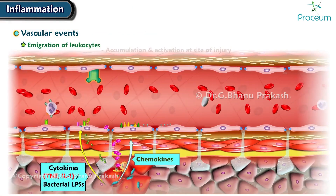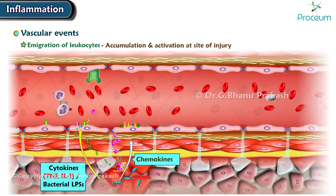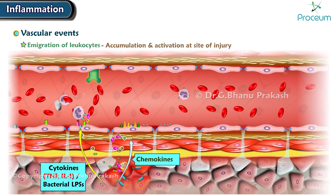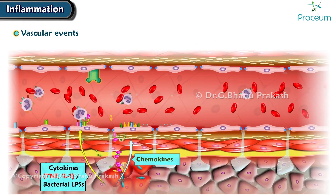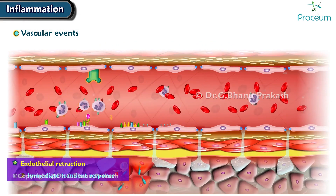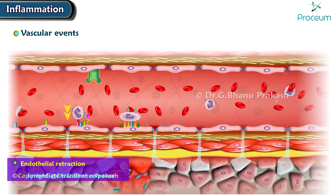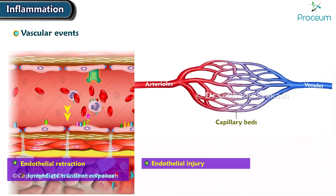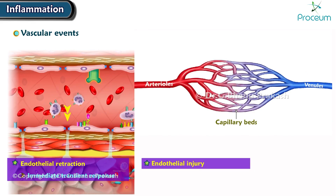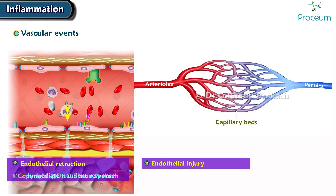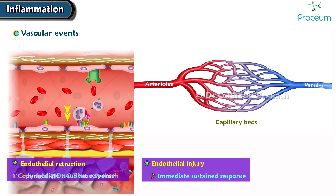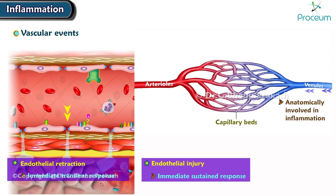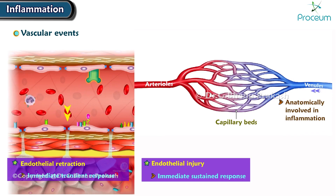The retraction of endothelial cells is the most common mechanism of vascular permeability and is known as the immediate transient response. It also results in endothelial injury in arterioles, capillaries, and venules, creating an immediate sustained response. Remember, anatomically small vessels are involved in inflammation, such as venules.